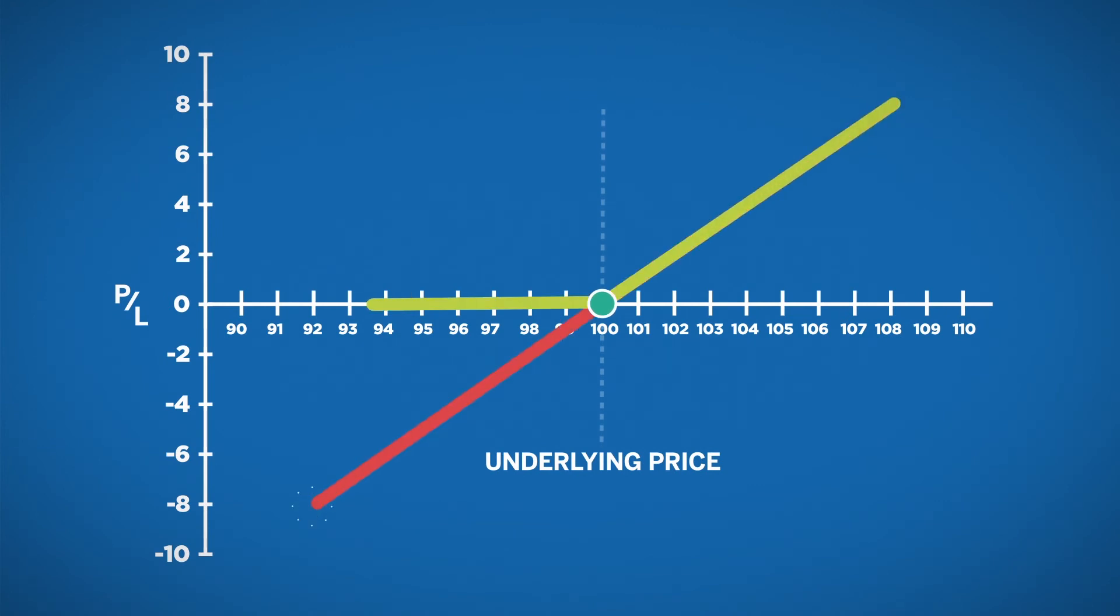As a result of the added cost of premium, the profit potential for a call is less than the profit potential of a future by the amount of premium paid.